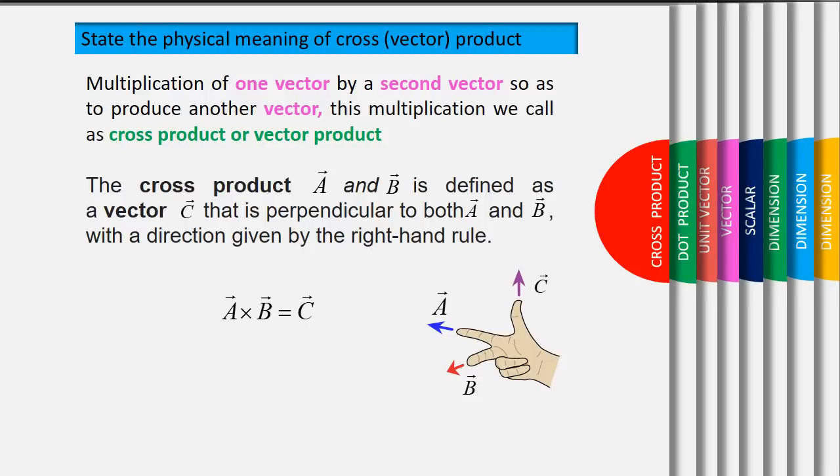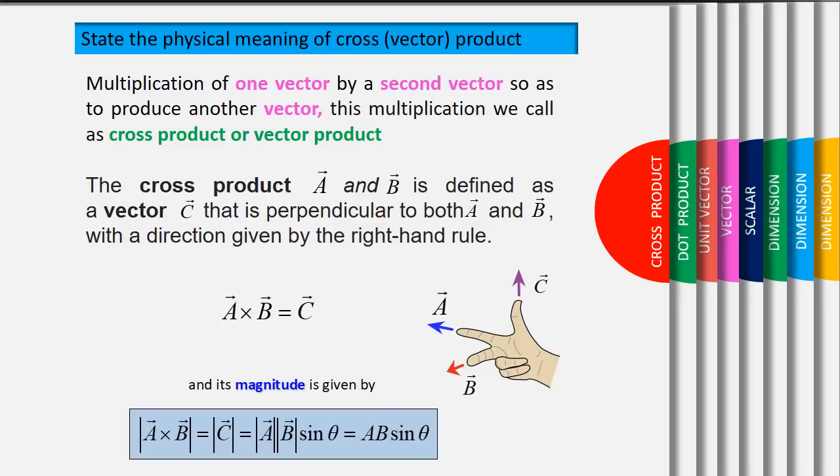The direction for vector c, you can apply right-hand rule shown in the figure given. Its magnitude is given by modulus a cross b equivalent to a b sin theta.